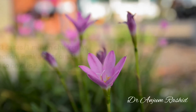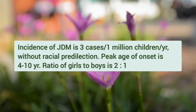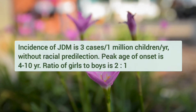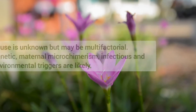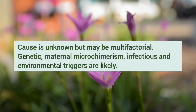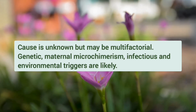Incidence of JDM is 3 cases per million children and peak age of onset is 4 to 10 years. Ratio of girls to boys is 2 to 1. The cause of JDM is unknown but it may be multifactorial. Genetic factors, maternal microchimerism, infections, and environmental triggers are likely.